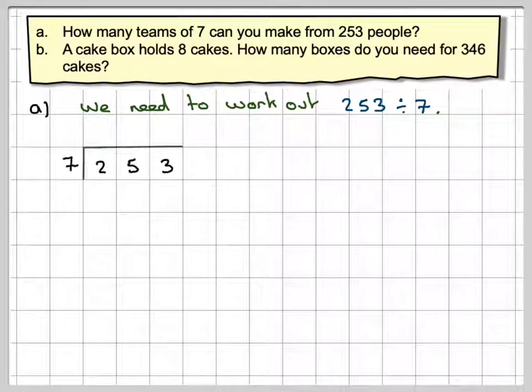So setting that out using pencil and paper, we're not going to use a calculator here. So 253 and seven out in the front here to divide.